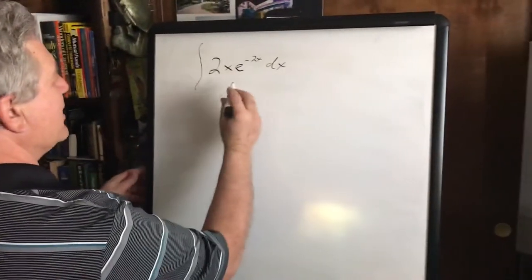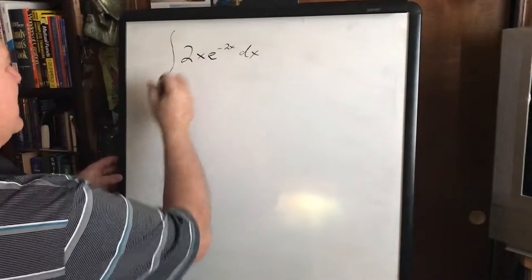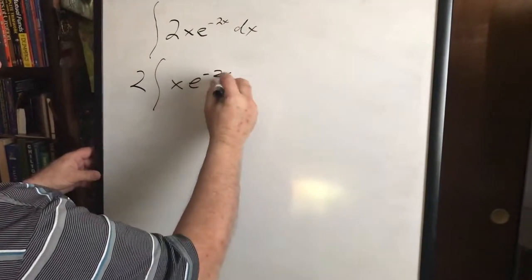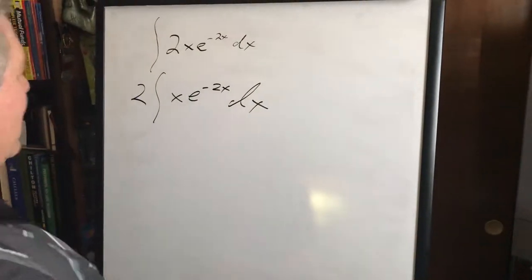The traditional way of doing integration by parts is to say, let's take the integral of 2x e to the negative 2x dx.